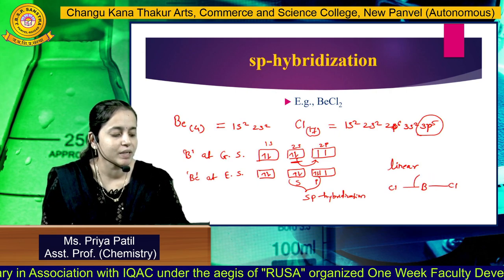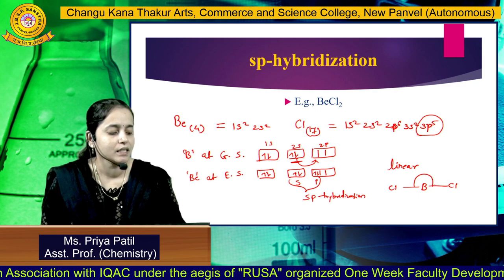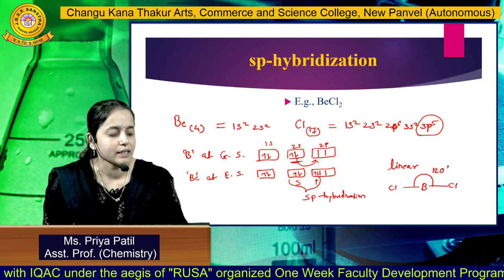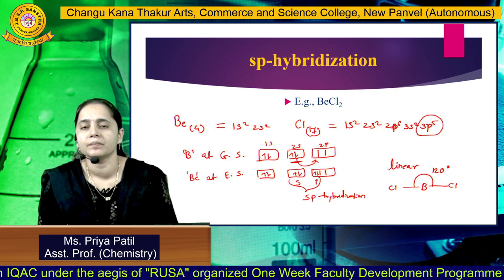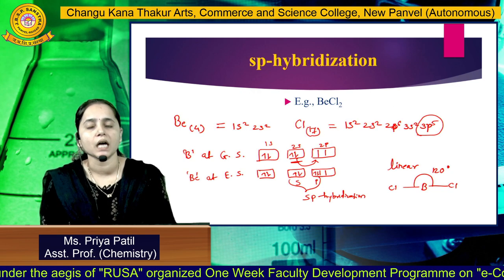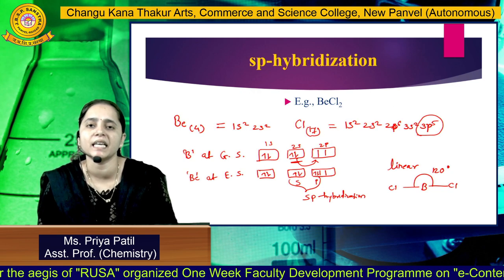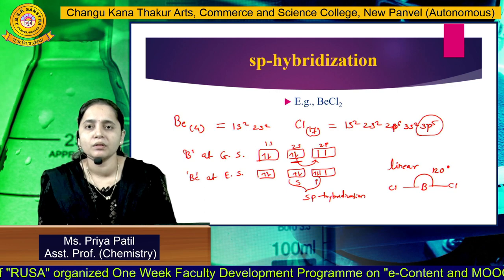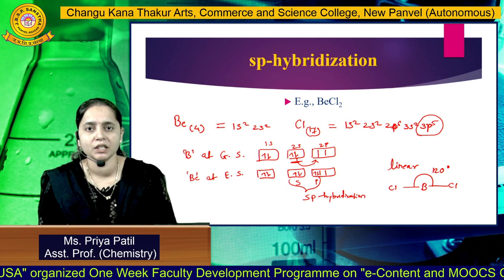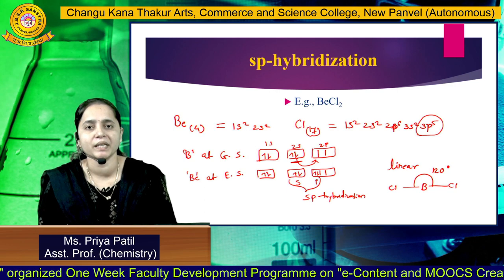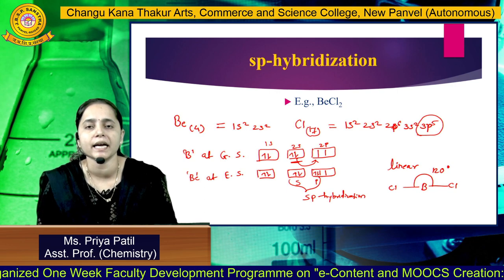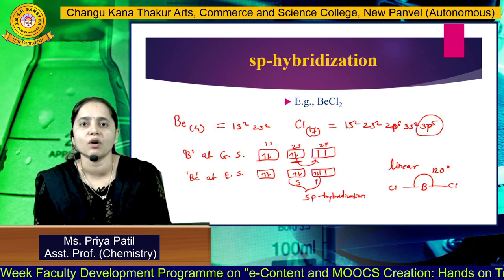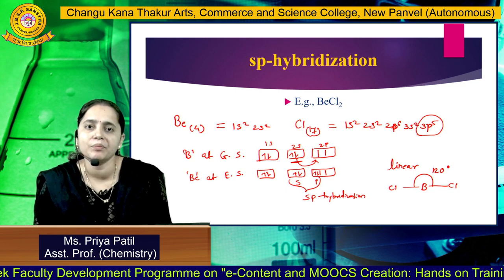The hybridization shown by BeCl2 is SP hybridization. The shape of BeCl2 is linear, as it shows SP hybridization, with Cl–Be–Cl arranged linearly. Both bonds have the same energy. This is the hybridization for BeCl2, that is SP, and all this concept is called hybridization.